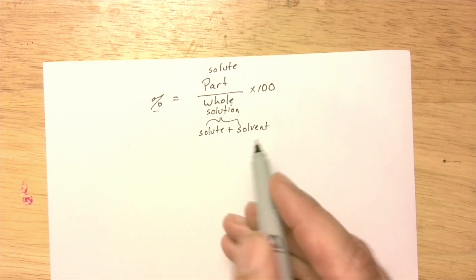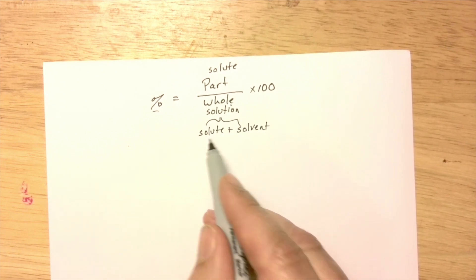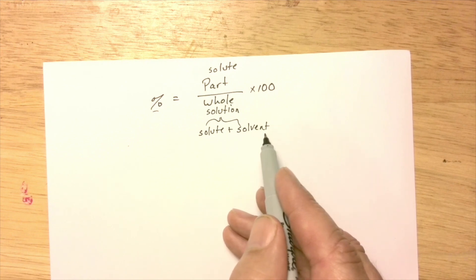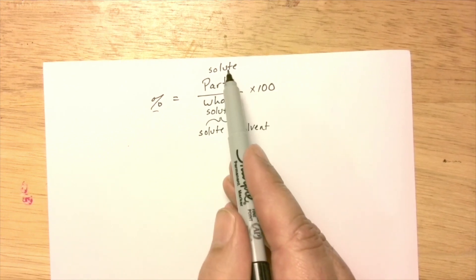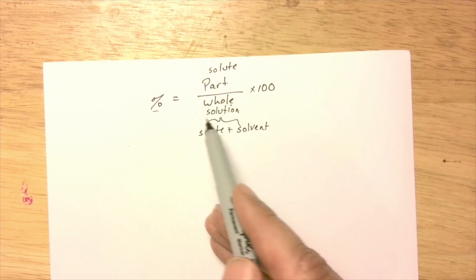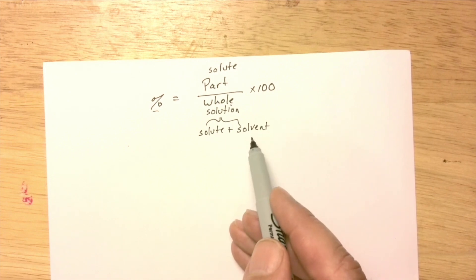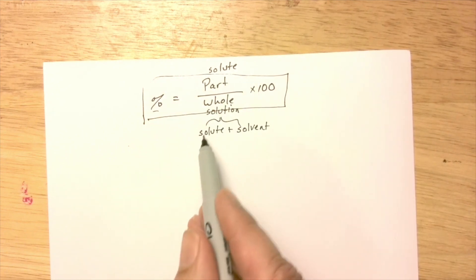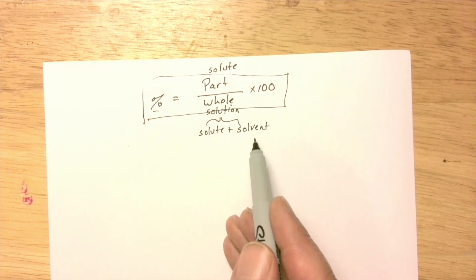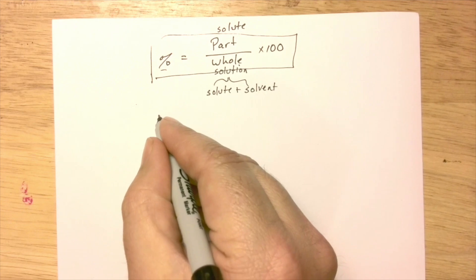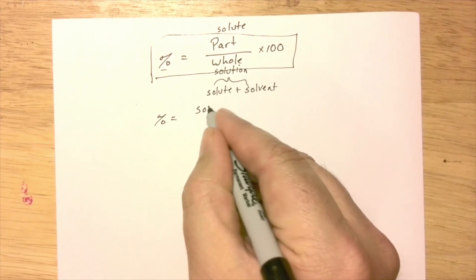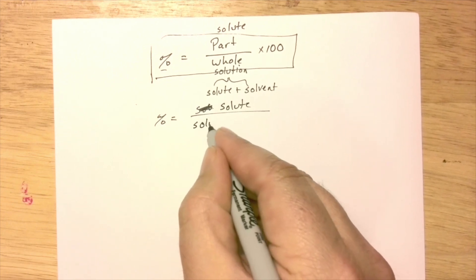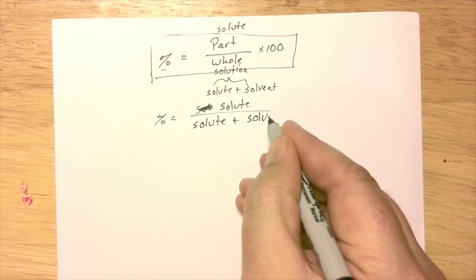The equation is: percent = solute ÷ (solute + solvent) × 100. So for problem one: 32.5 grams of glucose ÷ (32.5 grams of glucose + 155 grams of water) × 100. Do not cancel the 32.5s — you must add the denominator first.